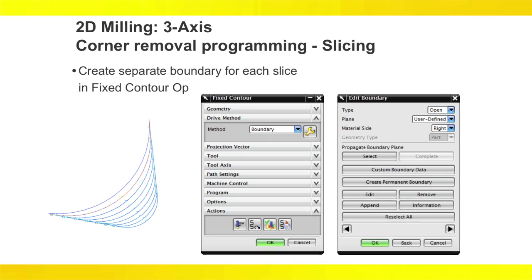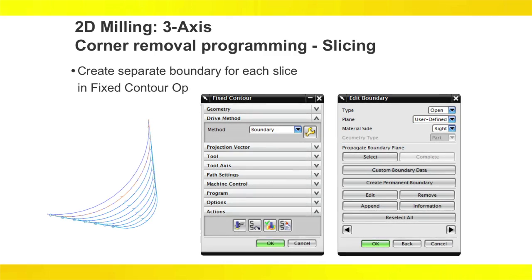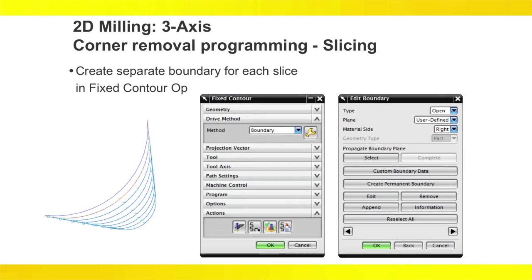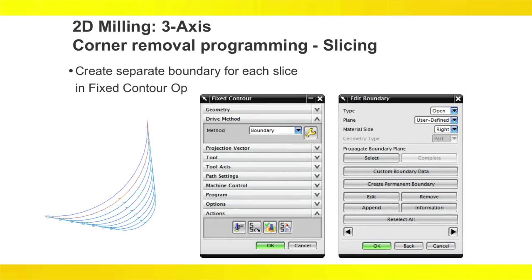In the cutting parameters corners tab, activate adjust feed rate on arcs to have NX automatically calculate the ideal reduced feed rate for each successive slice.